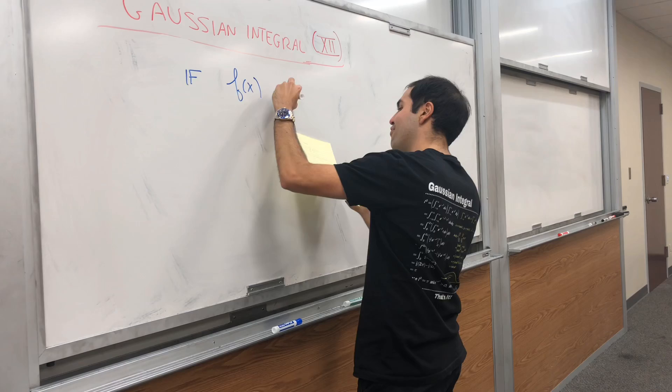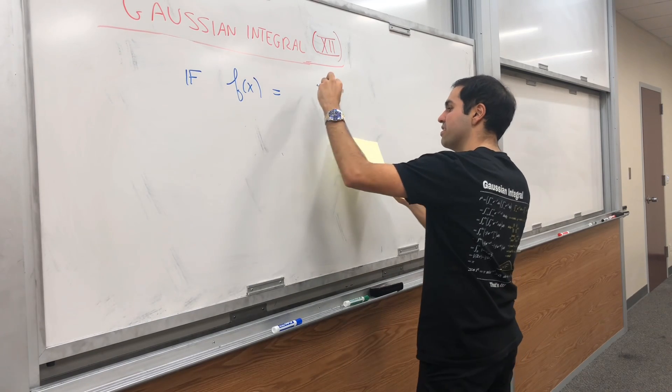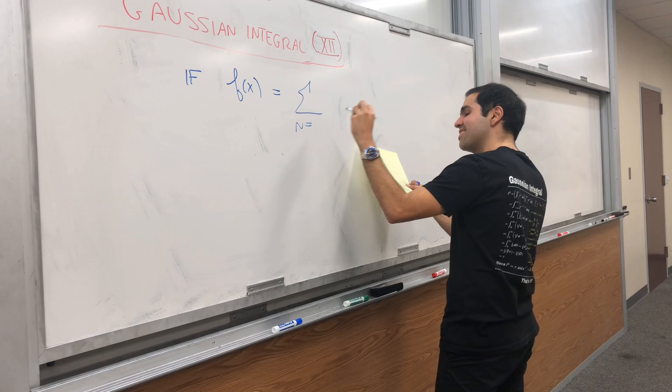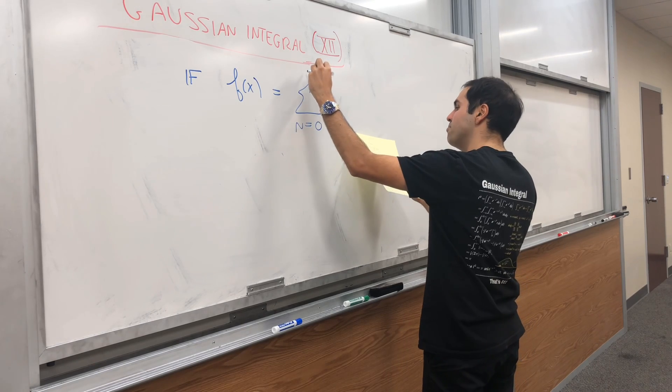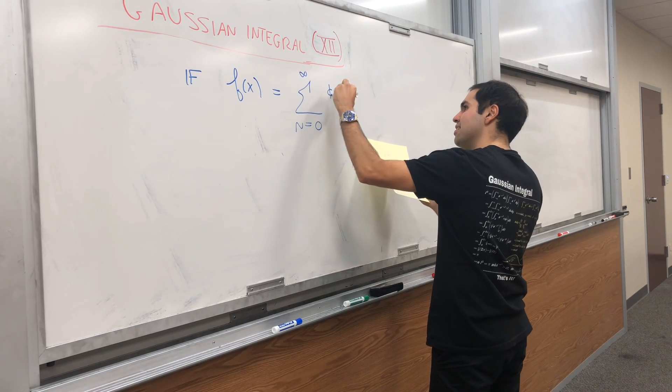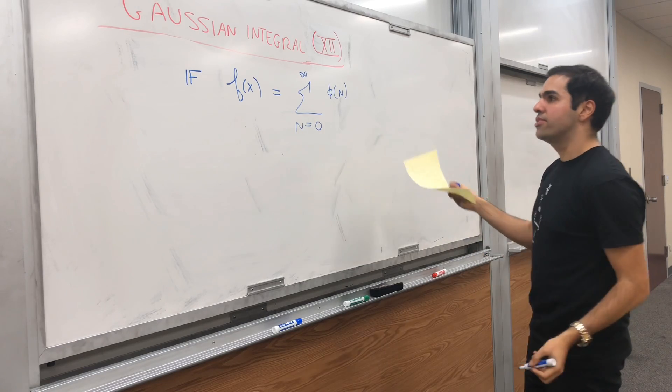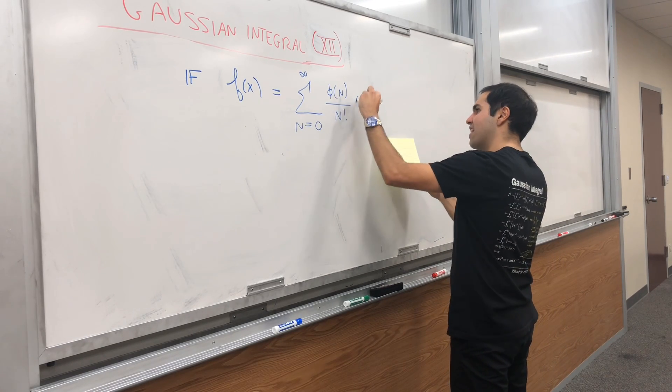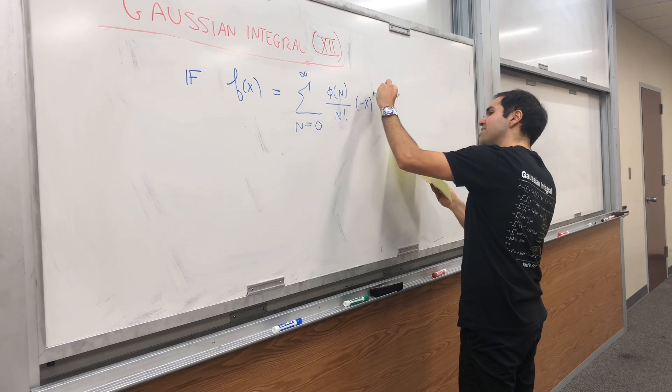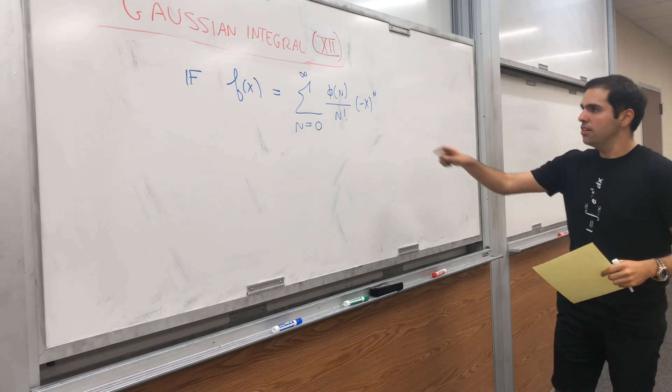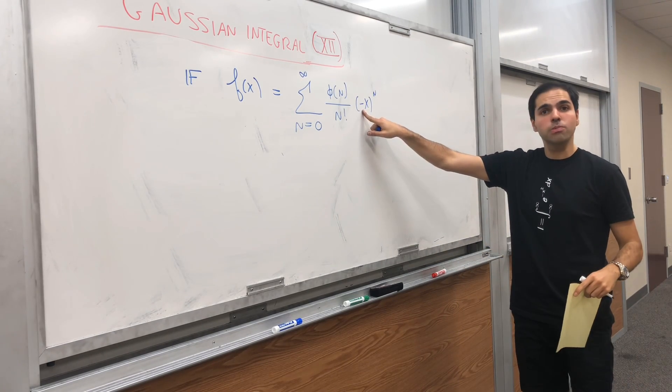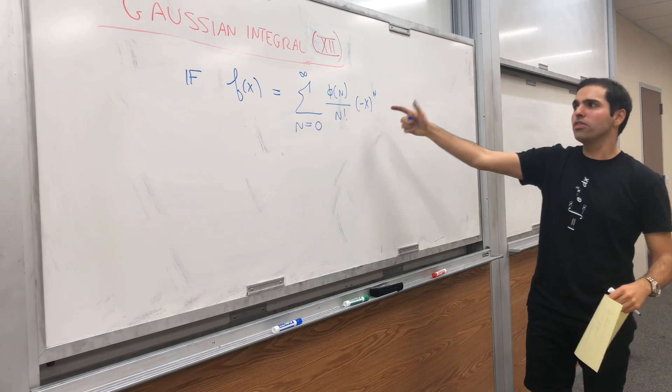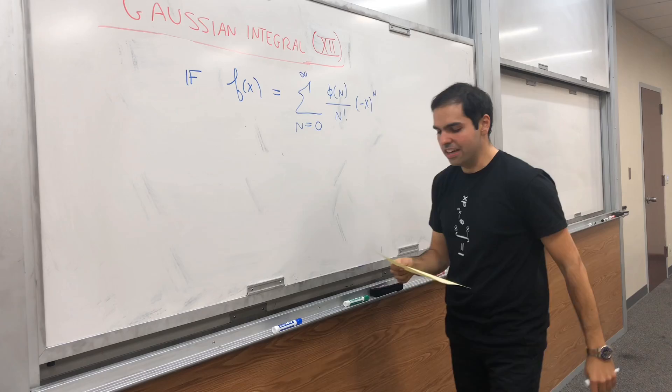Namely, suppose you can write f as some power series, not quite a power series of x, but a power series of minus x. Suppose there's some phi such that f of x equals sum phi n over n factorial times minus x to the n. If there were not this minus, it would be a Maclaurin series, but this is almost a Maclaurin series with minus 1 to the n.